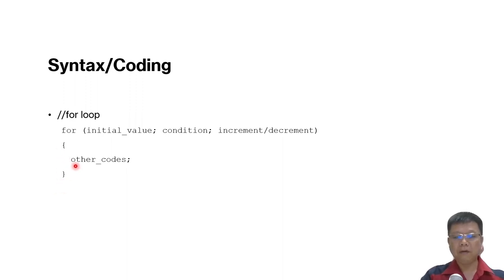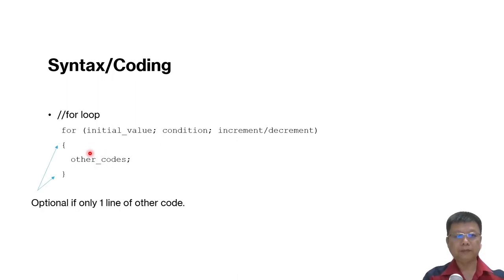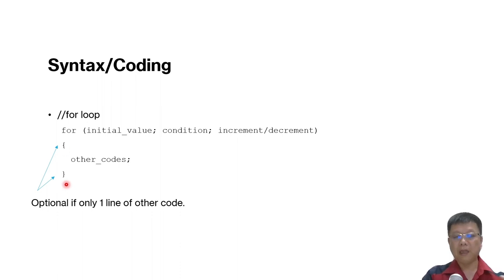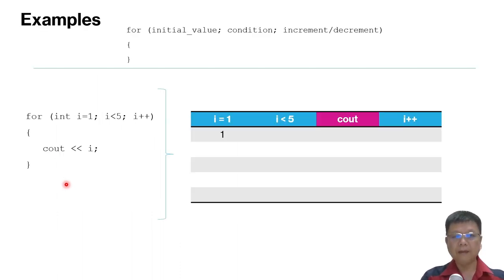If there is one line of code, the curly bracket is optional. But if more than one line of code, it will not run properly without them. So for one line, curly brackets are optional, but if more than one line, please put the curly brackets.